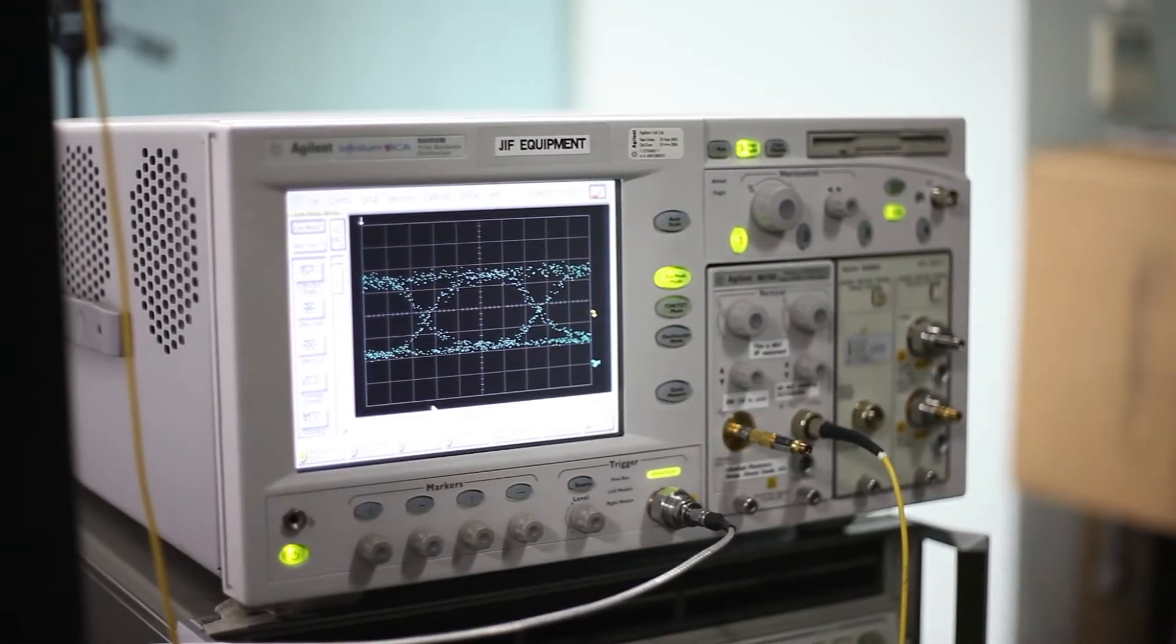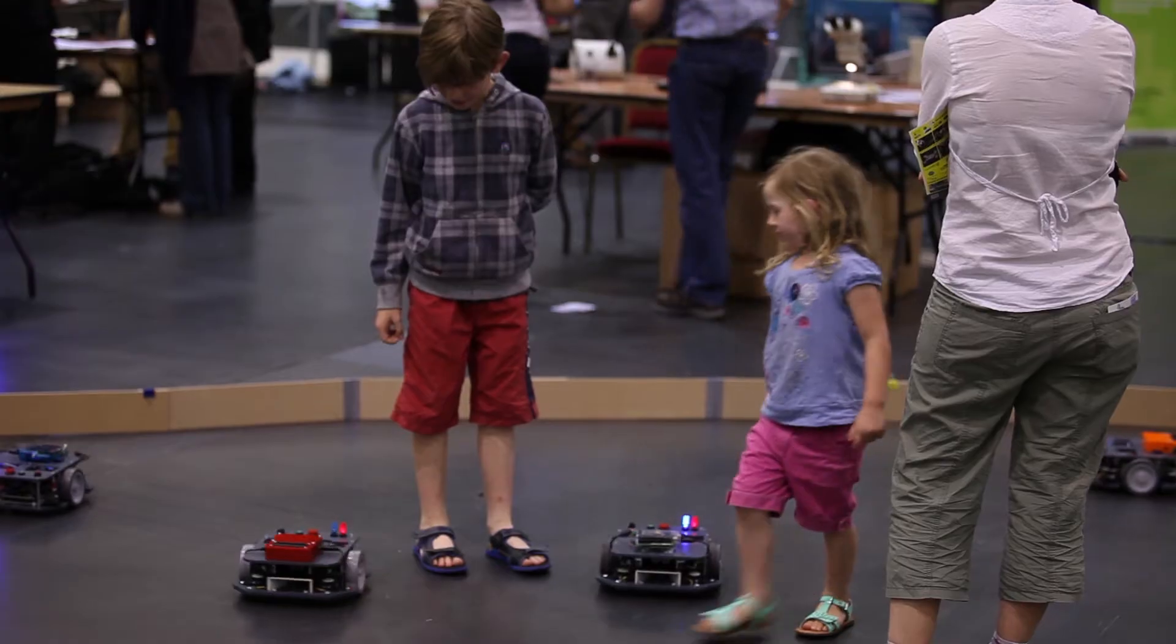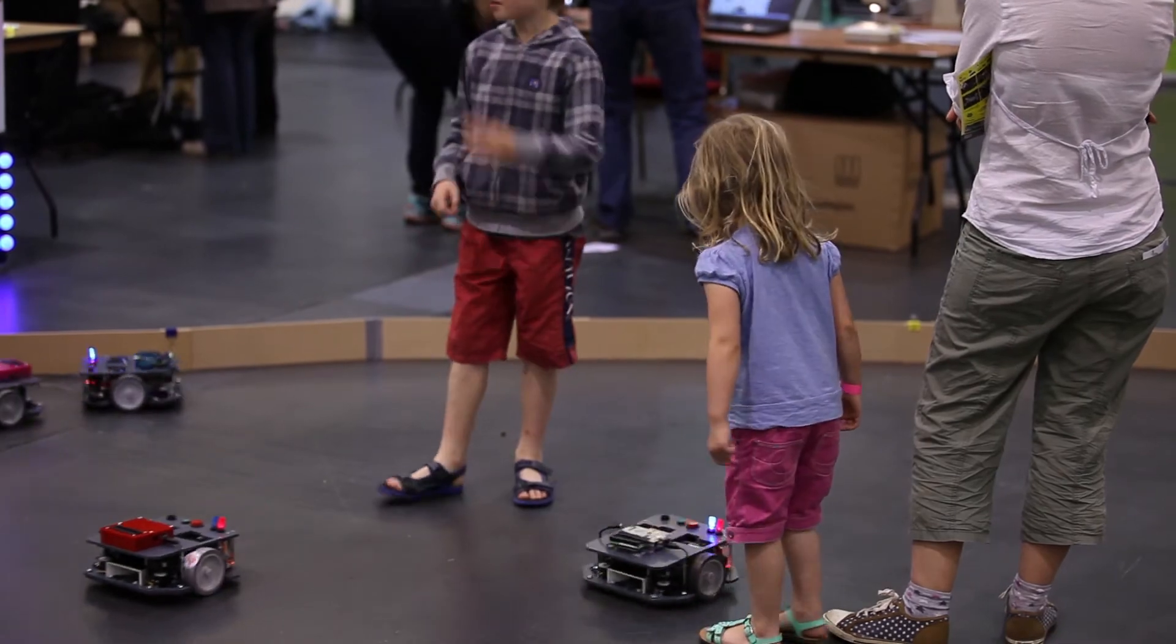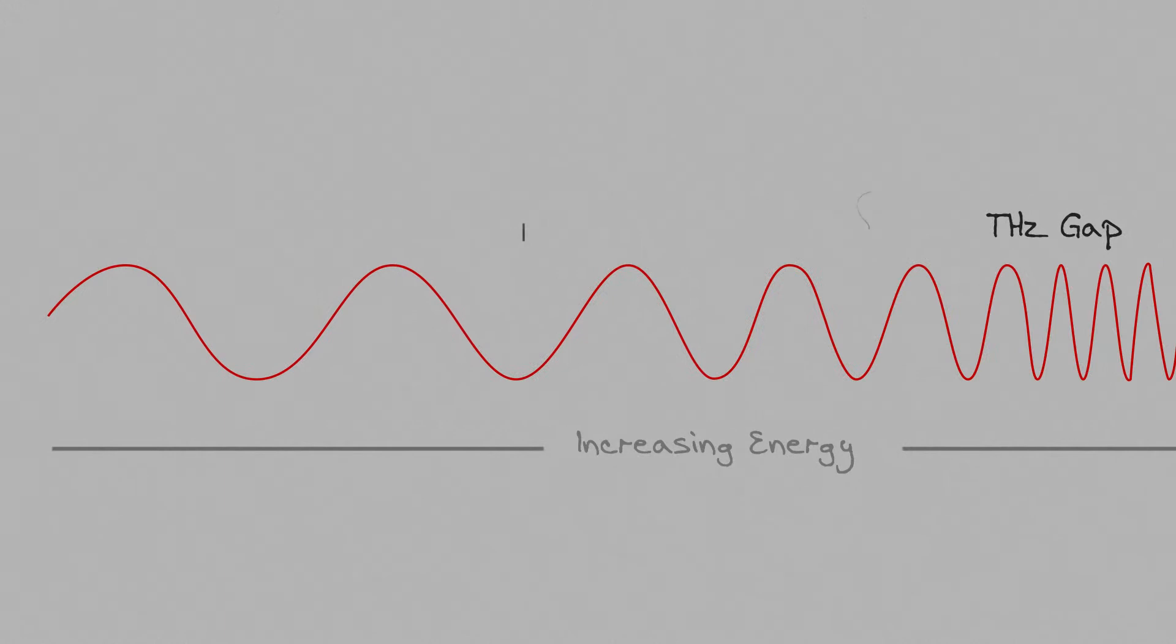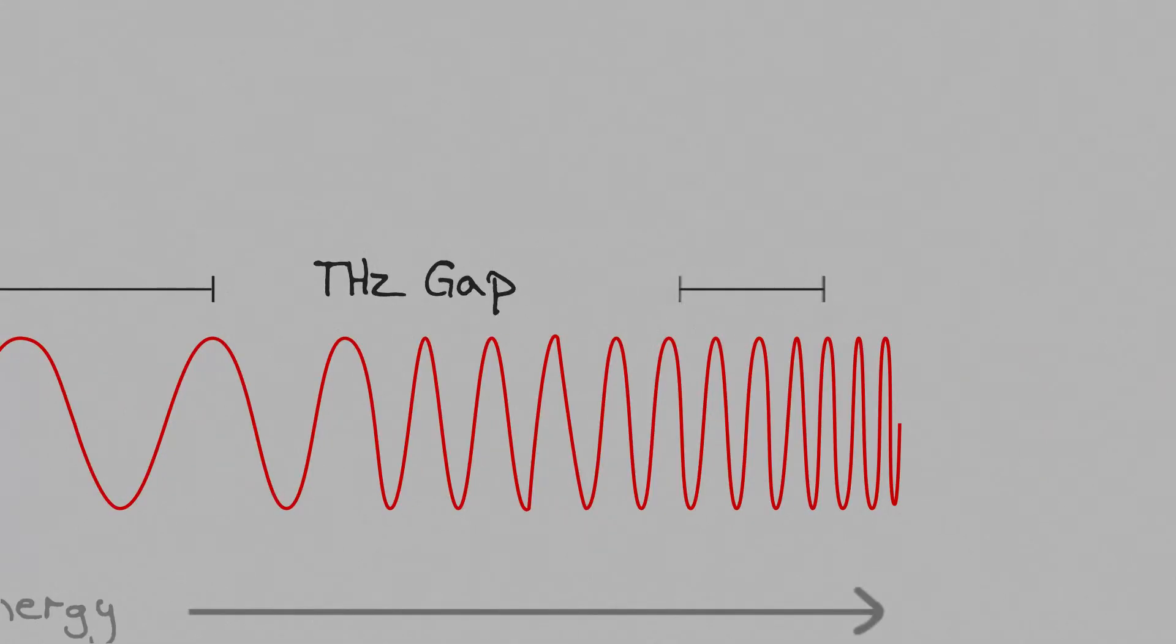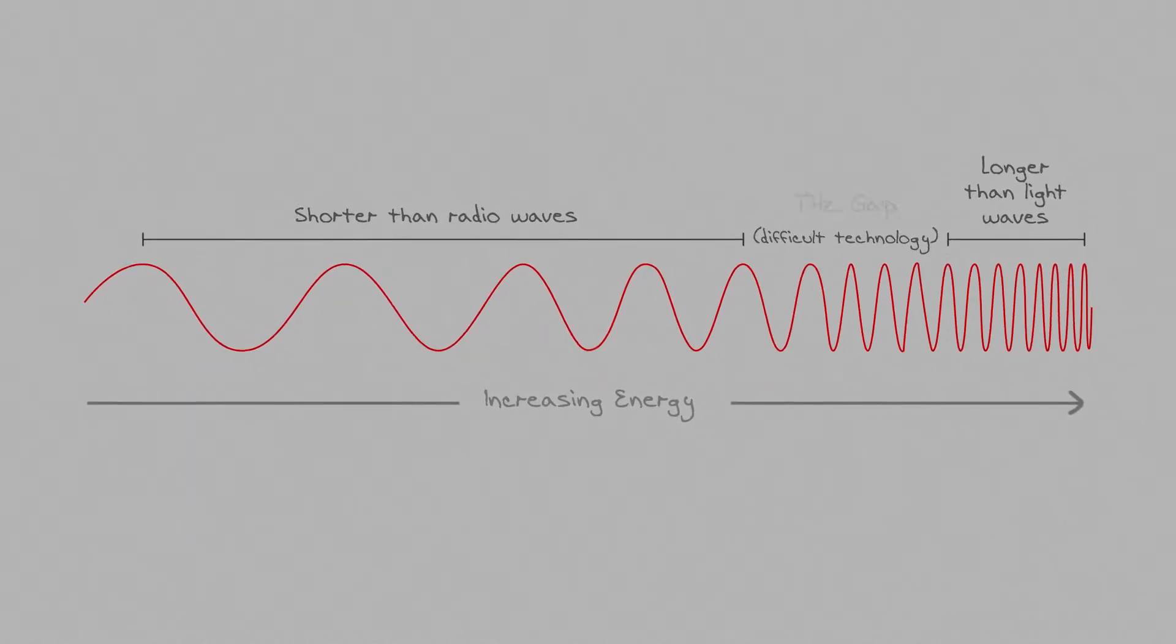Whereas in the terahertz region, it's much harder to make these sources, and this has meant that not many people have used this terahertz region for most of the 20th century. Terahertz is a very difficult area of the electromagnetic spectrum to work in. The waves are far shorter than normal radio waves, and yet they're far longer than the light waves that we can see. The technology is very difficult, and so it's a challenge, a scientific challenge to solve.